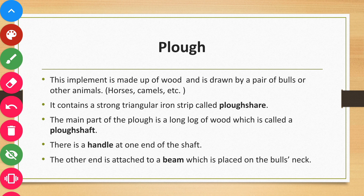Let's discuss the main parts of the Plow. First, it contains a strong triangular iron strip called the Plow share, which helps to plow the soil. The second important part of the Plow is a long log of wood called the Plow shaft.